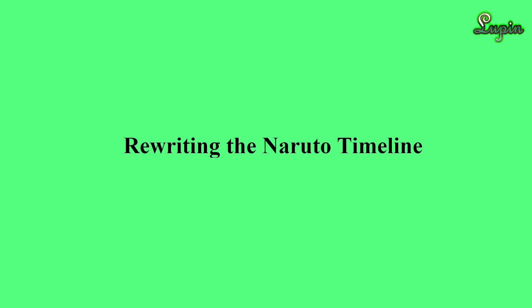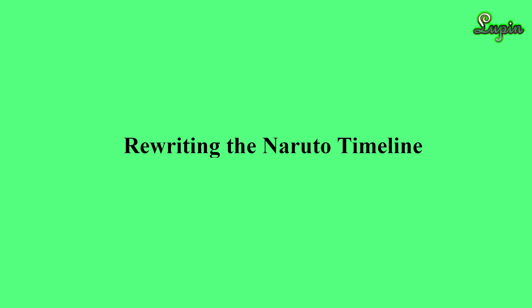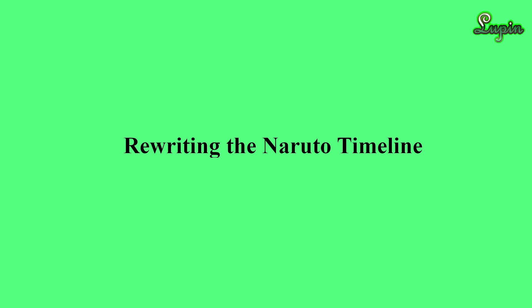Sealantau did just that with their Naruto timeline, and so did I. You'll be able to see it on the timeline in the visuals of the videos that will follow this. When doing my calculations, Part One of the series was set to 63 KY and Part Two was 66 KY. Boruto's era was set to 82 KY for what little it will matter. The Boruto end of Sealantau's timeline was already very sparse and so far it hasn't factored very much into this project.